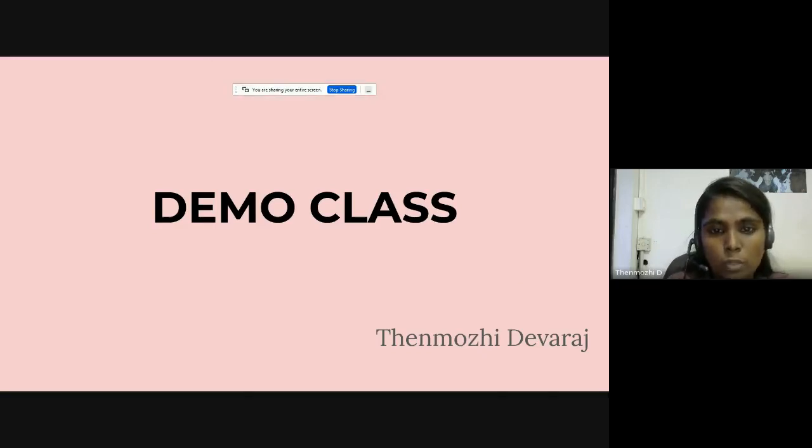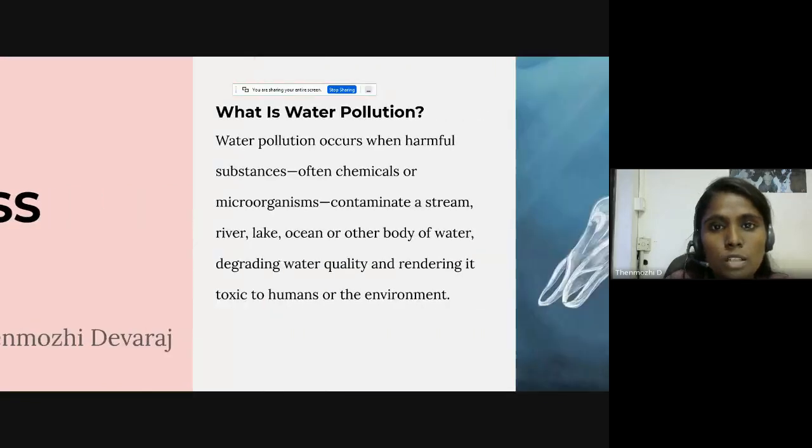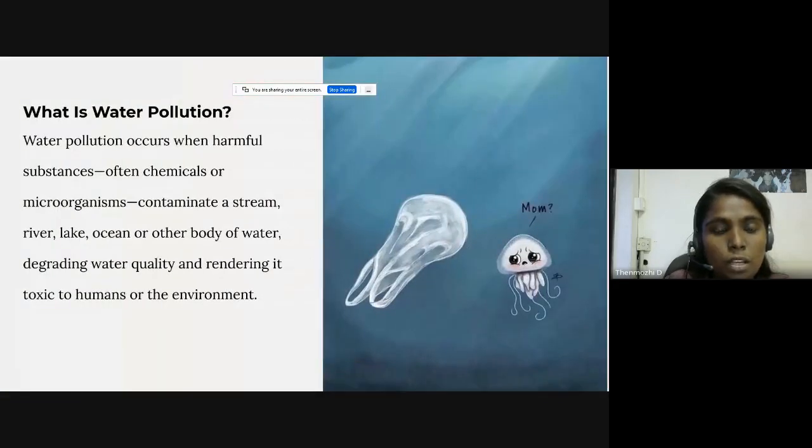Today's class will be learning about what is meant by water pollution. Water pollution occurs when harmful substances, often chemicals or microorganisms, contaminate a stream, river, lake, ocean, or other body of water, degrading water quality and rendering it toxic to humans or the environment.